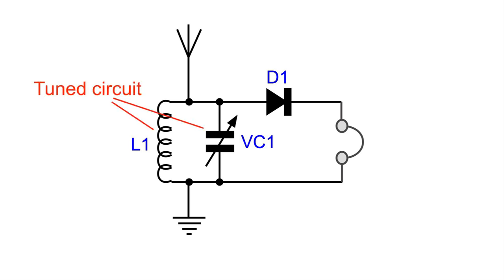The first area we need to look at is the tuned circuit. This consists of an inductor or coil and a capacitor which is made variable to enable it to tune various signals.